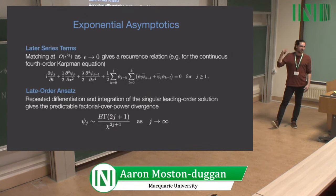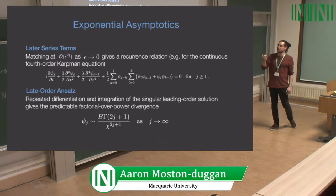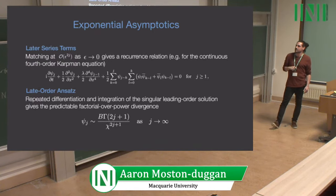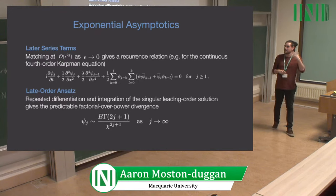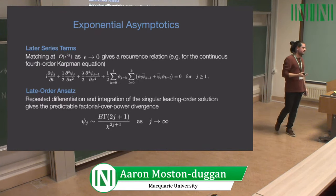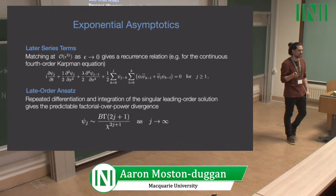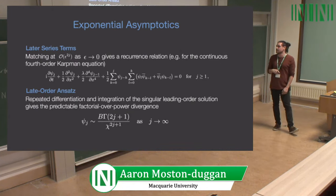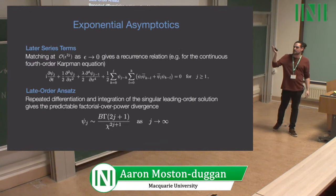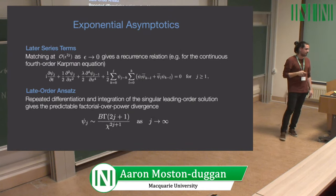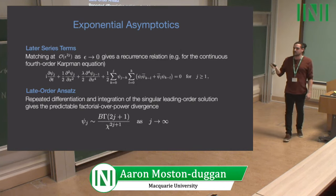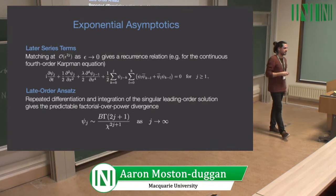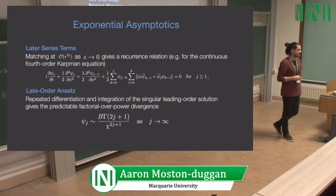Matching at higher orders of epsilon gives a recurrence relation. For the fourth order Karpman equation this gives a predictable factorial-over-power divergence in the series. The whole aim is to determine the prefactor B and the singular chi, which we get from the singularities and their local behaviour in the analytically continued solution.